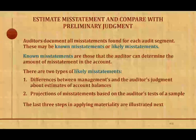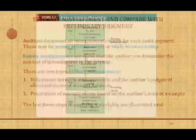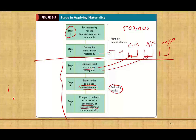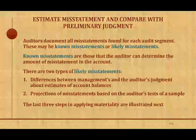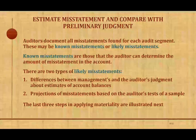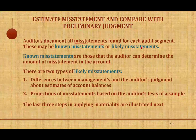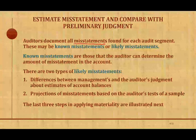After we set up materiality, we're going to go ahead and complete the audit procedures. So we're going to have an audit program we have to follow. We're going to collect the audit evidence and keep track of our mistakes — audit and document all misstatements. We keep a tally of all the misstatements found in each audit segment: in cash, in receivable, in inventory, in notes payable, in accounts payable, and so on. We're going to have two types of misstatements.